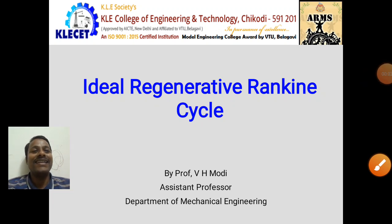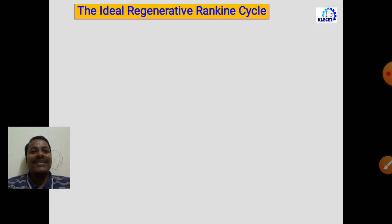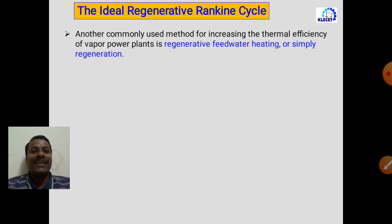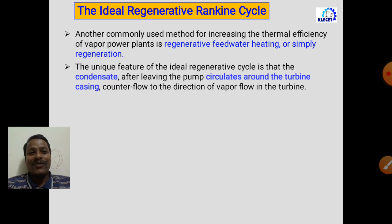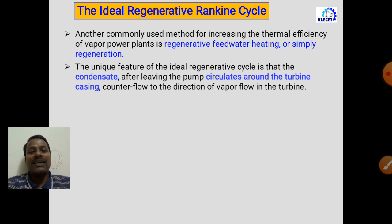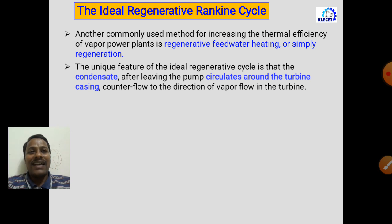Let's discuss the ideal regenerative Rankine cycle. The ideal regenerative cycle is an improvement over the normal Rankine cycle to increase its thermal efficiency. In the regenerative Rankine cycle, we take the condensate which comes out of the pump and send it into the turbine casing, where it absorbs heat energy from the steam turbine casing and becomes preheated.